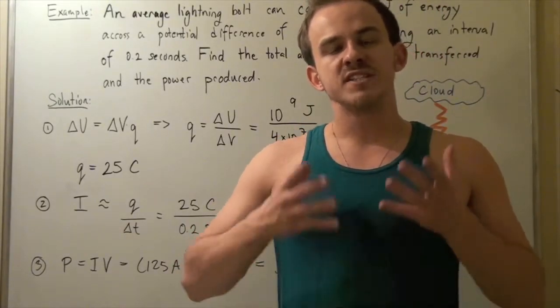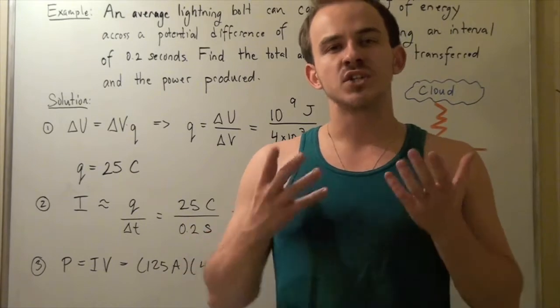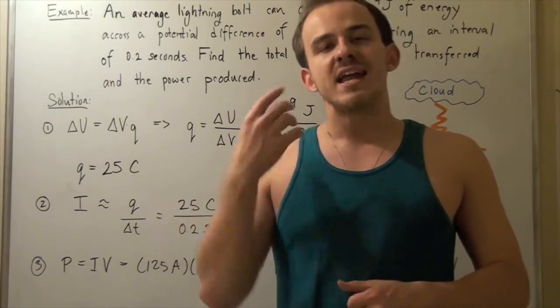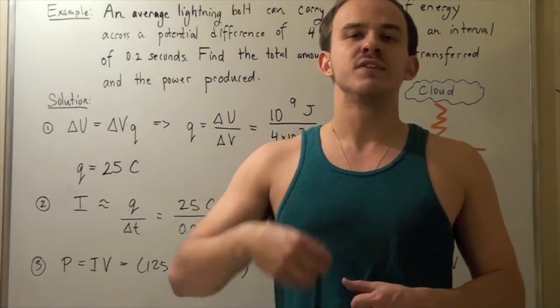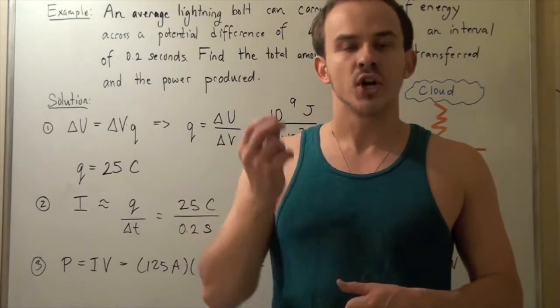Lightning is one of the many different types of examples of electric current that exists in nature. In other words, lightning is a natural phenomenon. It's a natural example of electric current.